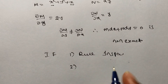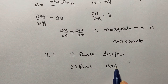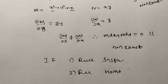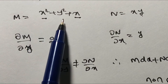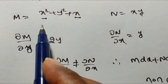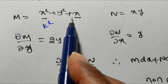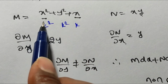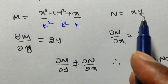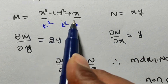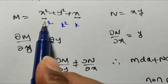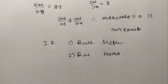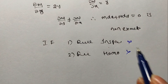Go for Rule 2: homogeneous function, where M and N are both homogeneous functions of the same degree. Observe M contains x², y², and x terms. The first two terms have degree 2, but the third term x has degree 1. Since all terms in M do not have the same degree, M is a non-homogeneous function. So you cannot apply the homogeneous method either.